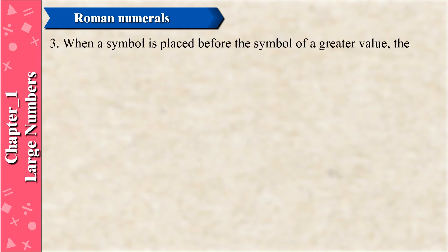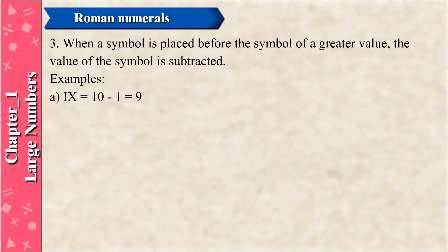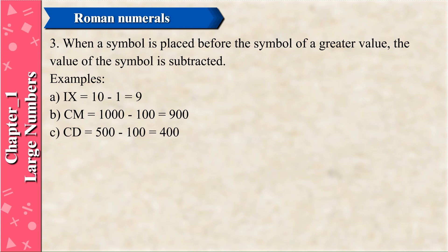When a symbol is placed before the symbol of a greater value, the value of the symbol is subtracted. Examples: IX = 10 − 1 = 9; CM = 1000 − 100 = 900; CD = 500 − 100 = 400.